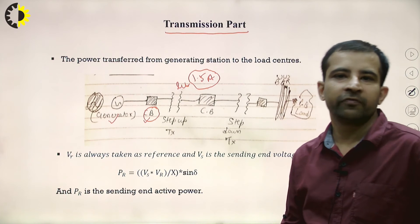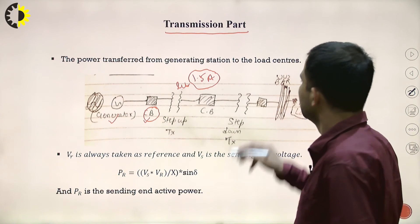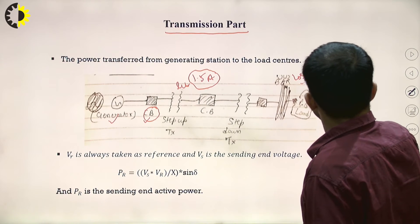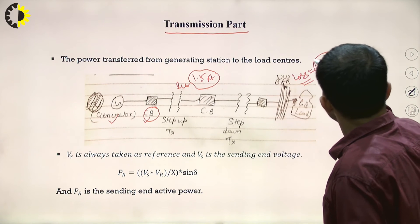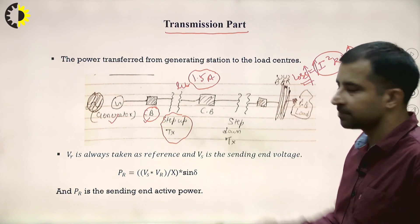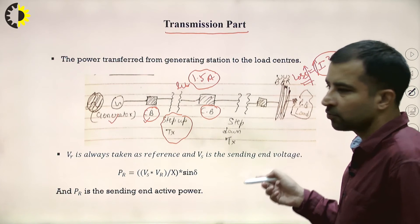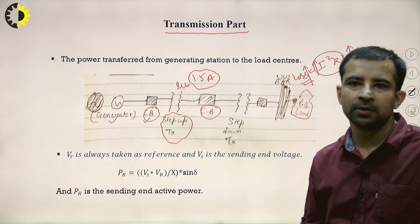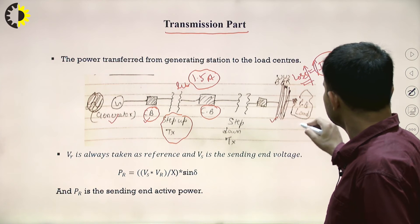If a high amount of current flows in the circuit, losses increase because power loss is I²R — proportional to the square of current. Hence the circuit breaker trips. Then comes the step-up transformer to raise voltage, another circuit breaker for safety, a step-down transformer at the load end to bring voltage down to 220 V or 440 V, and finally the load.